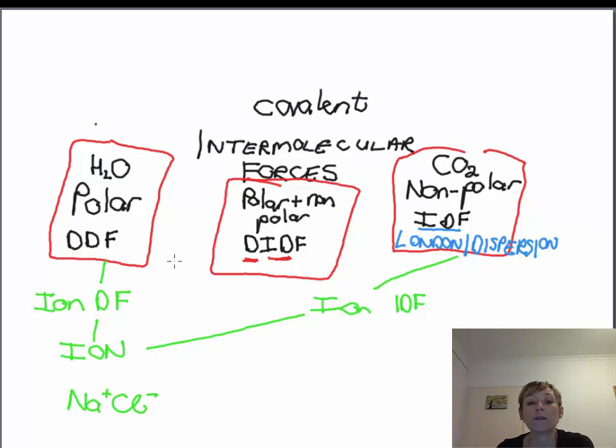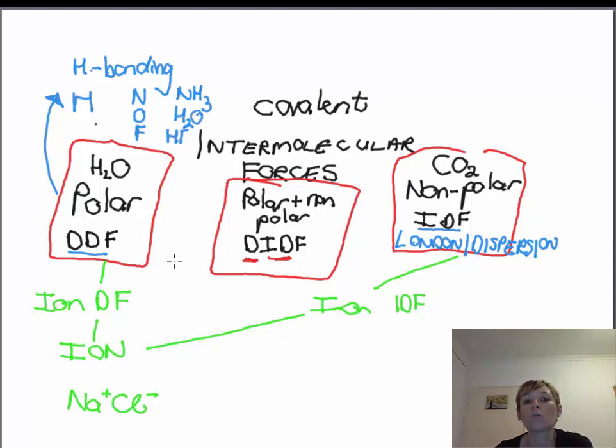Then we're also going to look at a very special type of dipole-dipole force. It is in fact the strongest dipole-dipole force. It is known as hydrogen bonding. Now, hydrogen bonding occurs between the following molecules. The hydrogen of one molecule and either the nitrogen, oxygen or fluorine of another polar molecule. So typical examples would be between molecules of NH3 or H2O or hydrogen fluoride and also alcohols that have the OH at the end of the molecule.